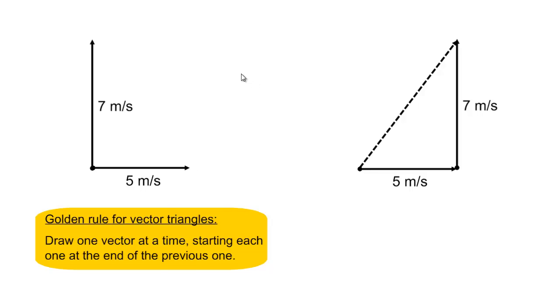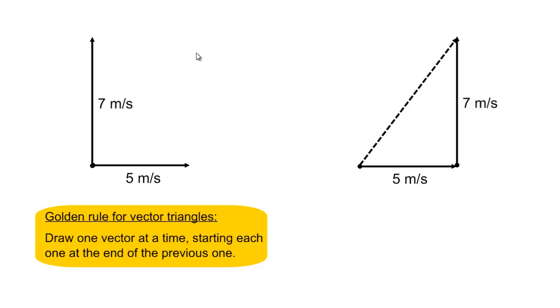To find the magnitude of this vector, we must use the Pythagoras theorem. Pythagoras theorem states that a squared plus b squared equals c squared for a right-angled triangle. This most certainly is a right-angled triangle.